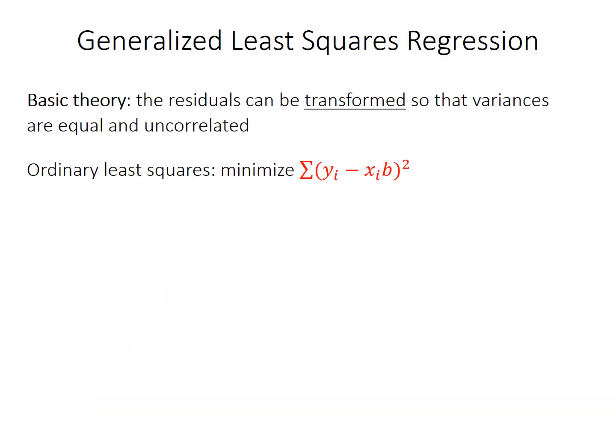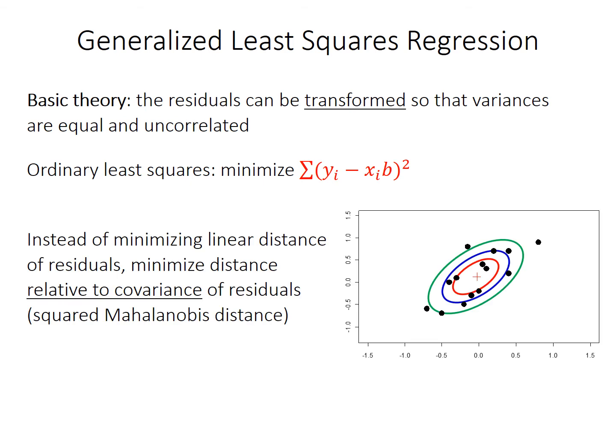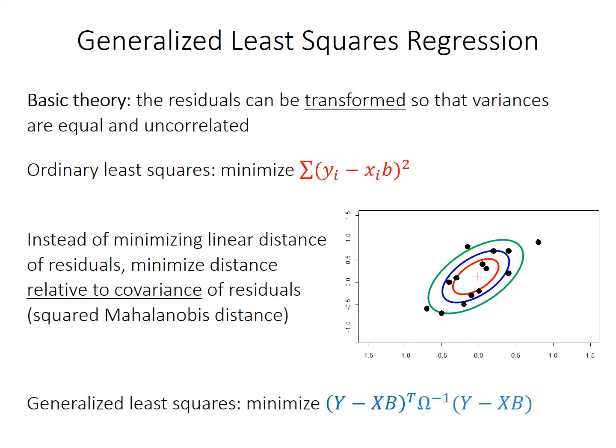I'll briefly go over the theoretical justification for how generalized least squares, or GLS, regression works, but spend most of the time on practical decisions you need to make to perform this method. Basically, GLS regression works on the idea that we can transform the residuals to remove this correlation structure — this autocorrelation. While ordinary least squares minimizes the linear distance between residuals, generalized least squares minimizes the distance relative to the covariance of those residuals. The Mahalanobis distance is a measure of multivariate distance after taking into account some covariance structure, so GLS regression is essentially minimizing the squared Mahalanobis distance of the residuals.